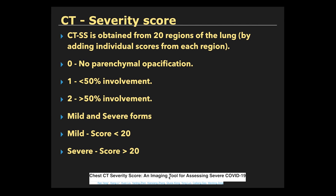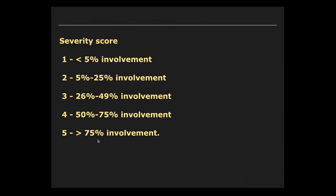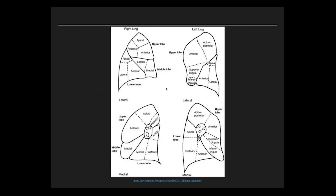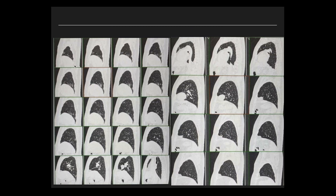You can refer to the RSNA article on this topic. In our hospital, we are following the segmental region method and it is found to be more useful. These are the bronchopulmonary segments — 10 on the right side and 8 on the left side — but in our CT-CVRT scoring, we are considering 10 segmental regions on the left side as well.